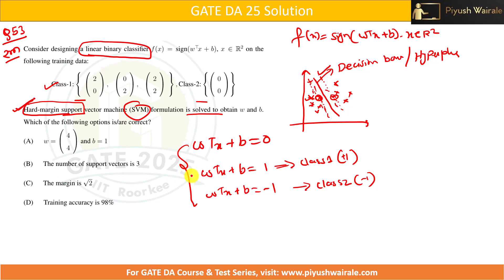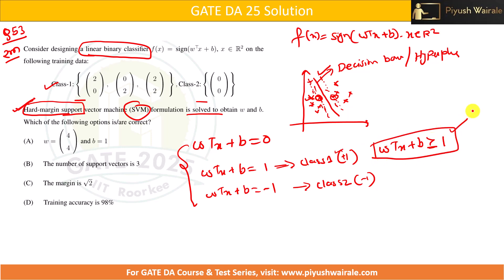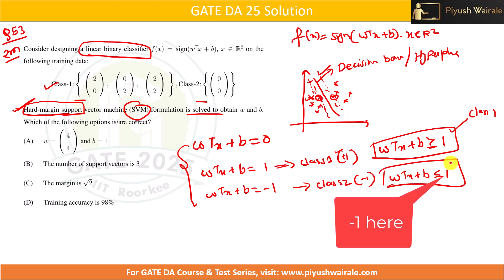For class 1 (label +1), any data point with w^T x + b ≥ 1 belongs to class 1. For class 2, any data point with w^T x + b ≤ −1 belongs to class 2. Let's now solve using the given data points.